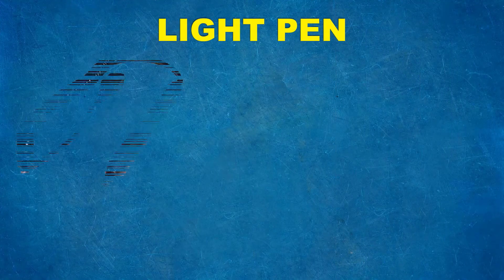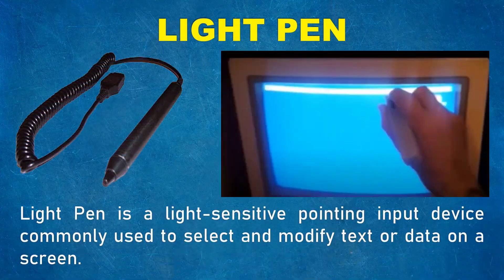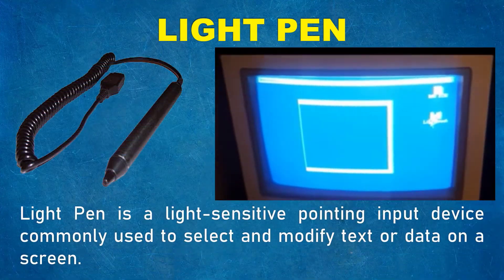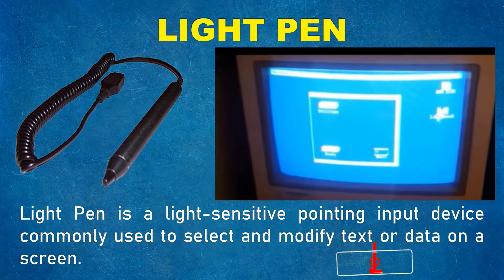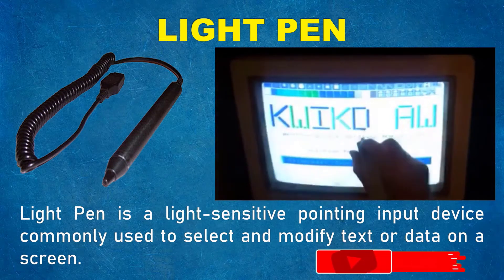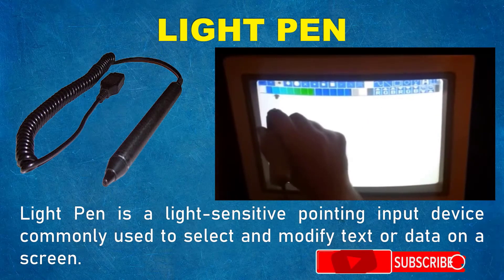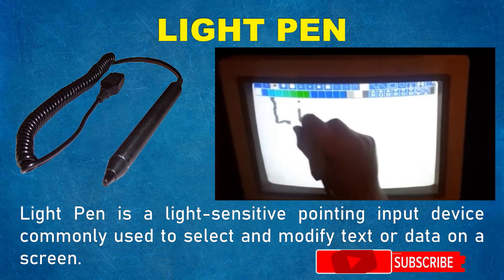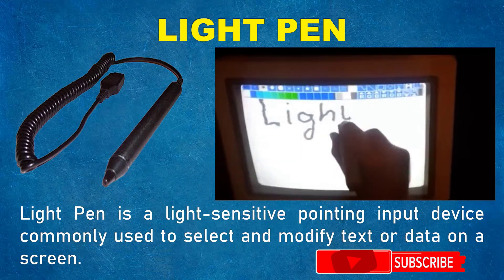Light Pen. Light pen is a light-sensitive pointing input device commonly used to select and modify text or data on a screen.